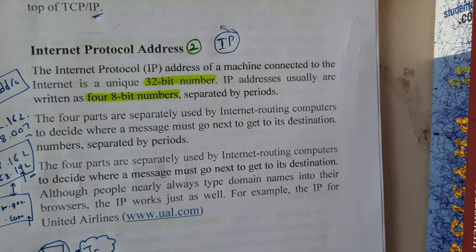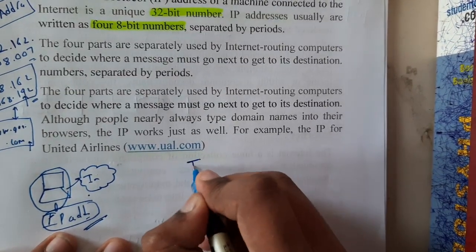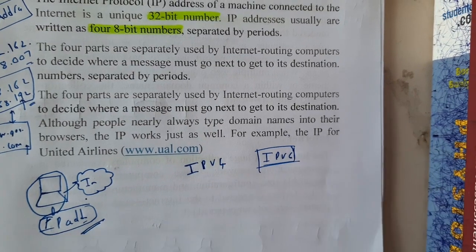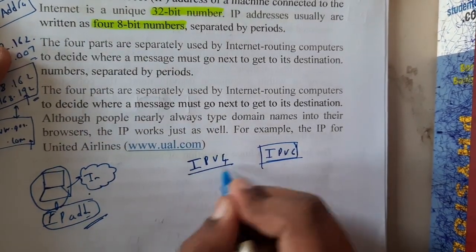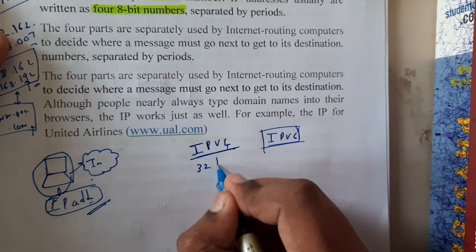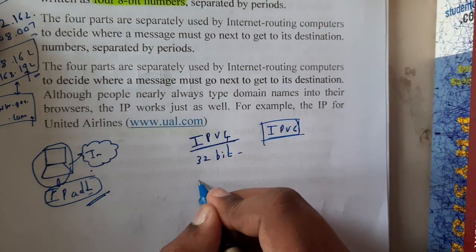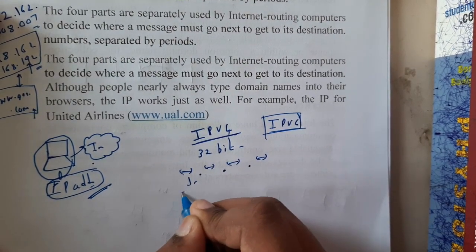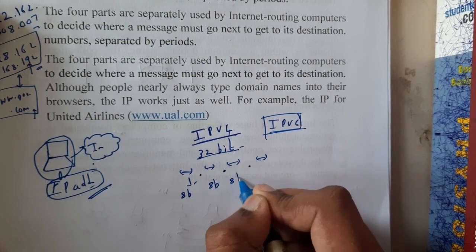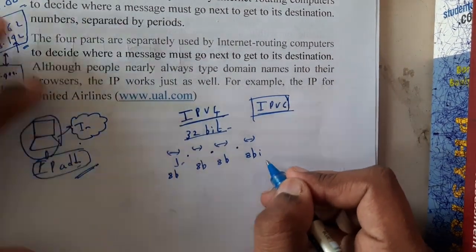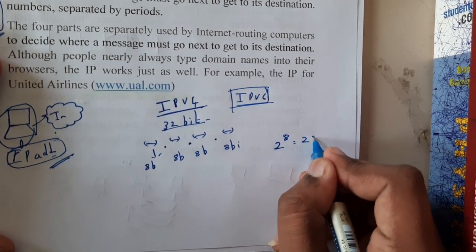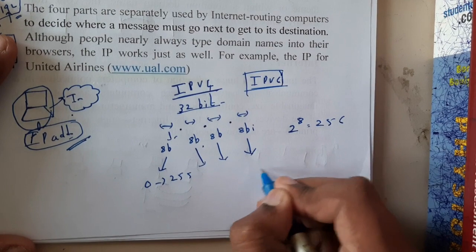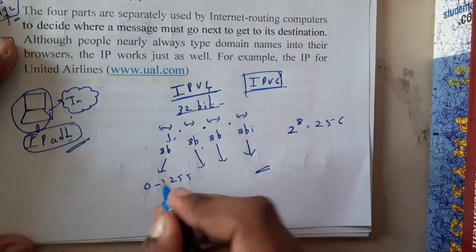We are currently using IPv4, and we also have the IPv6 concept but we'll be avoiding that for now. IPv4 is a 32-bit number, which is divided into 4 parts. Each part is of 8 bits. The combinations go up to 2 to the power 8, which is 256, so the values may range from 0 to 255 for each part of the IP address.